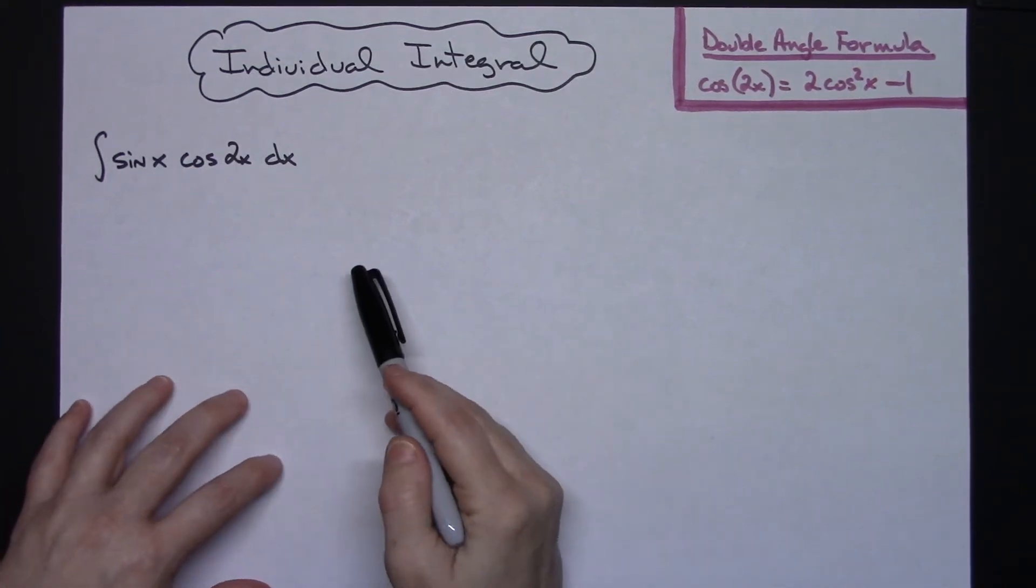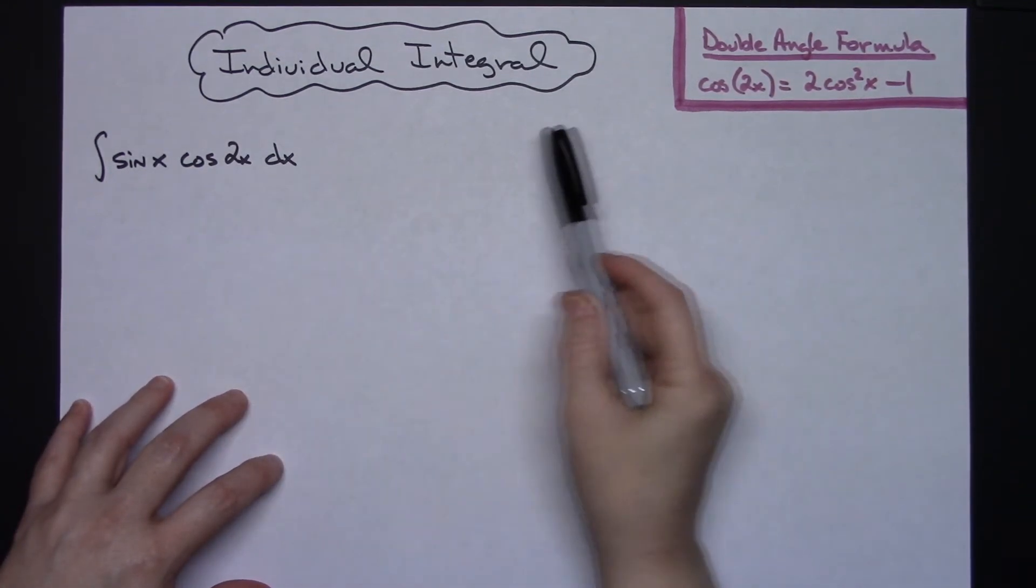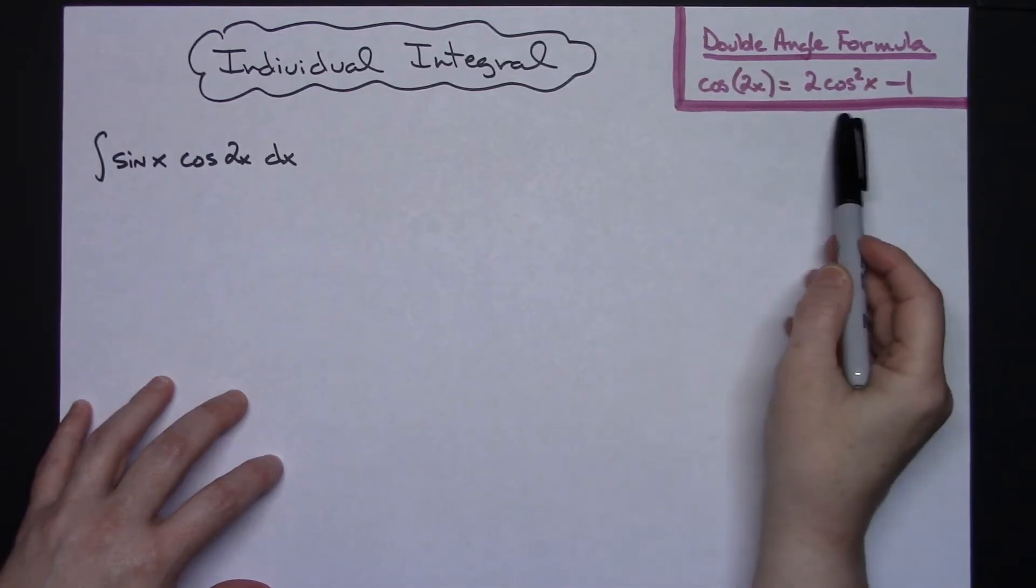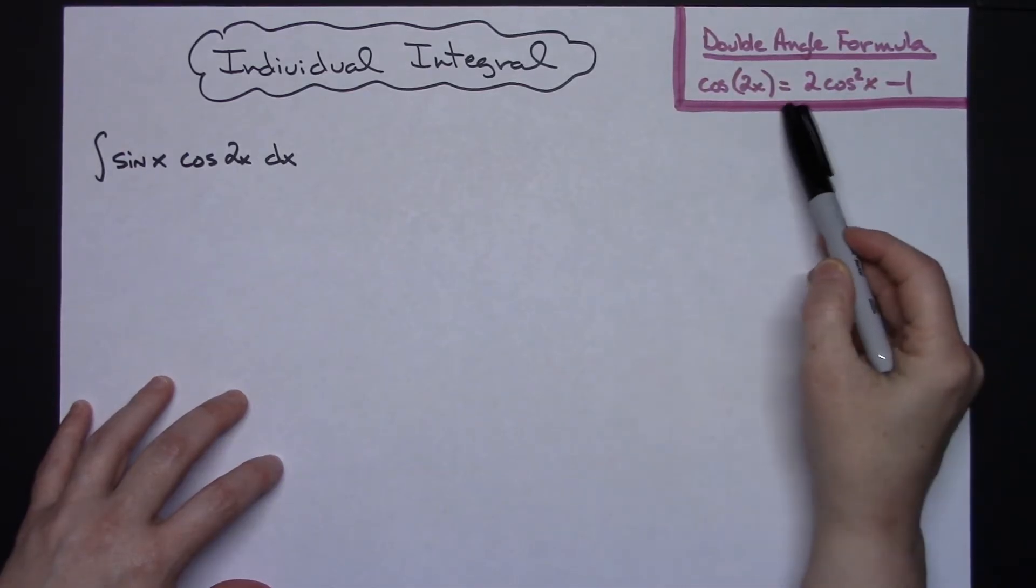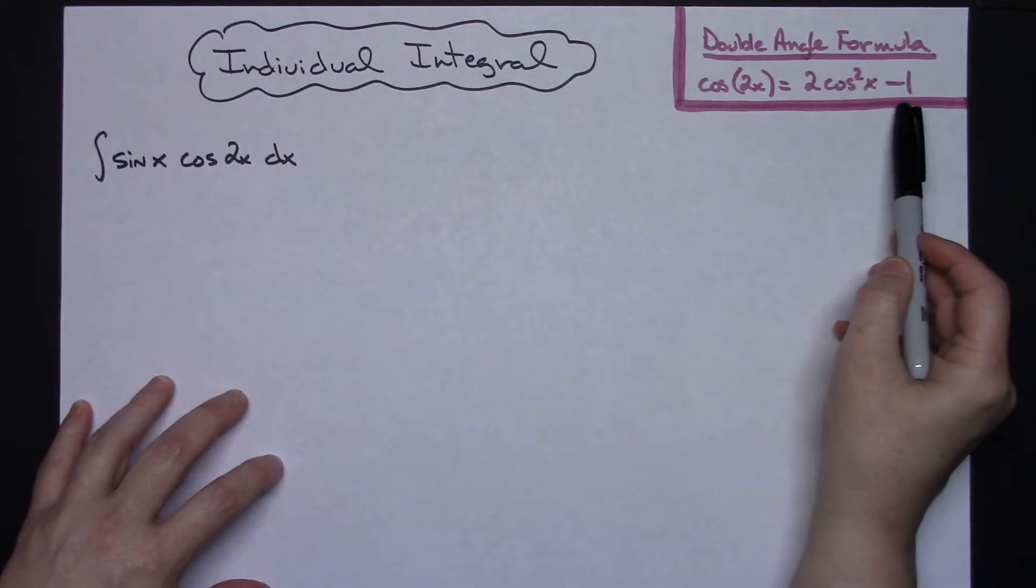In this video I'm going to be working out an individual integral. I am going to use this double angle formula: cosine of 2x is equal to 2 cosine squared x minus 1.